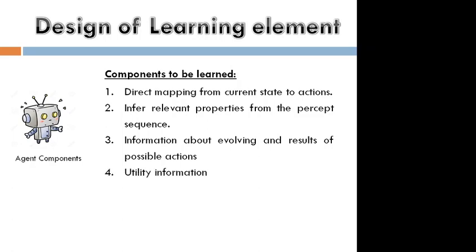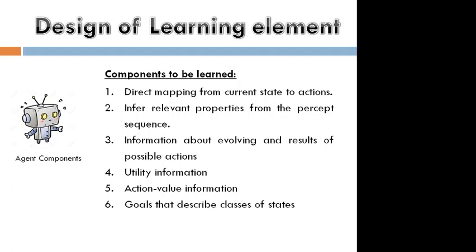Fourth, you need utility information — how much utility we are expecting, such as 90%, 100%, or 80% usage by the agent. Next, you need action value — what is the value for one action. And last, goal — which describes classes of states. You need to maintain the goal information: whether you reached it or not, and if you reached the goal, what the estimated cost versus current cost is. If the cost is high, next time you have to reduce the cost. That is agent components.